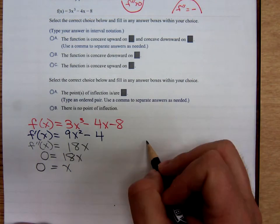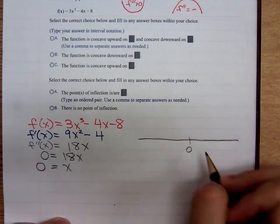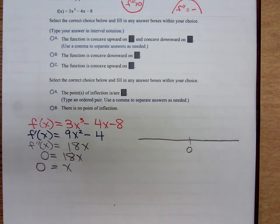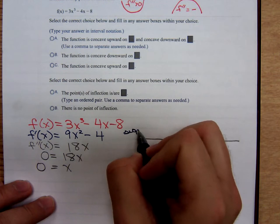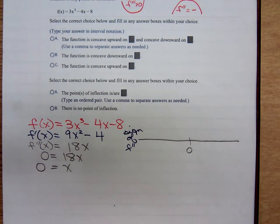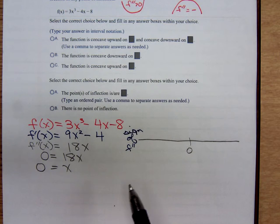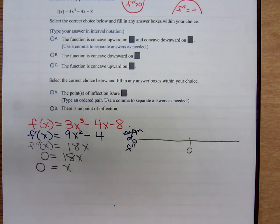We draw ourselves a number line. There's 0. And we're going to look at the sign of f double prime. When we were using the first derivative test to find the location of local extrema and increasing and decreasing intervals, I would write out beside the number line sign of f prime. Now that I'm using the second derivative to determine the concavity, I make a note sign of f double prime.